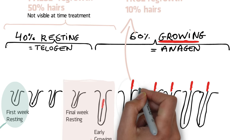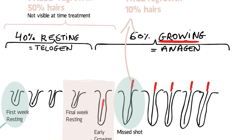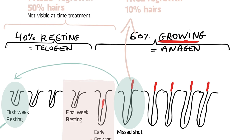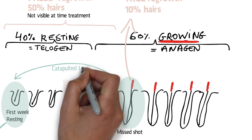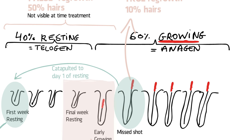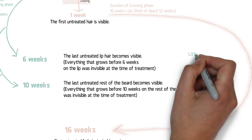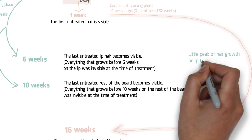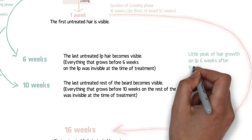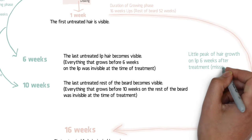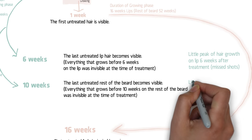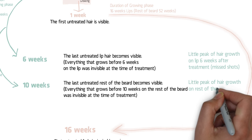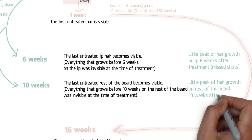What happens with the electrolysis shot that missed to kill the hair follicle? The hair root will be quite damaged, causing the hair to be catapulted into the first day of resting before gaining the strength to regrow. So the missed shots on the lip will become visible on average 6 weeks after treatment, meaning you will have a little peak of regrowth of hairs on the lip on average 6 weeks after treatment. The missed shots on the rest of the beard will become visible after 10 weeks.